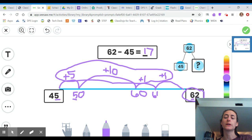So if we really wanted to check back and make sure you did it right, you could do 45 plus 17 and see if it makes 62.